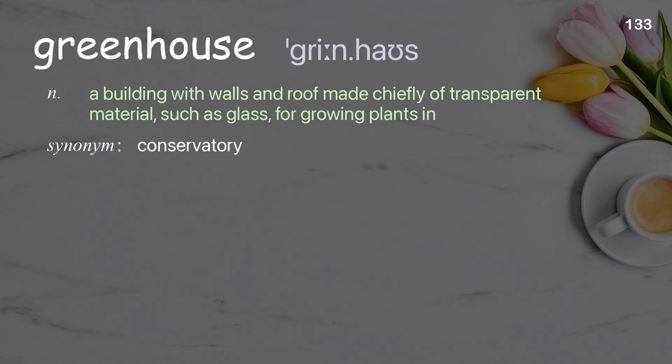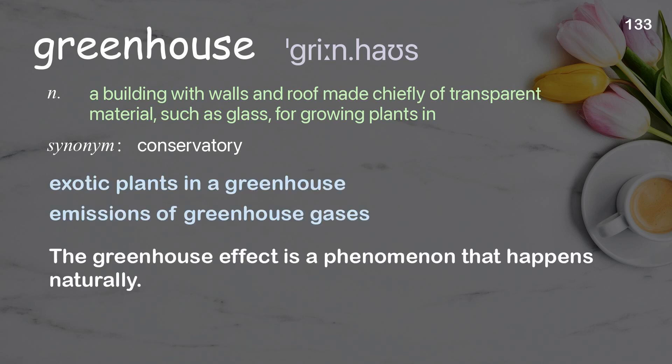Greenhouse: A building with walls and roof made chiefly of transparent material, such as glass, for growing plants in. Examples: Exotic plants in a greenhouse, Emissions of greenhouse gases. The greenhouse effect is a phenomenon that happens naturally.